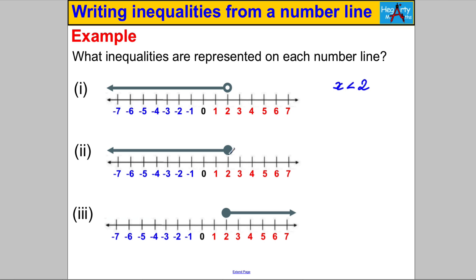What about this one? It looks almost the same apart from the circle being coloured in, so it's X less than or equal to positive 2. And what about this one? It's all the numbers to the right of 2, bigger than 2 but also equal to 2 because it's coloured in, so this is X bigger than or equal to 2.